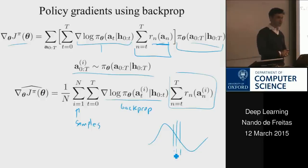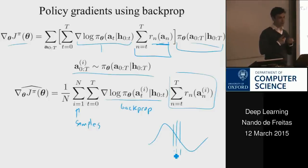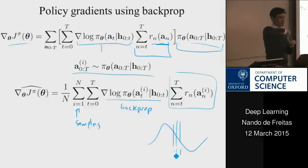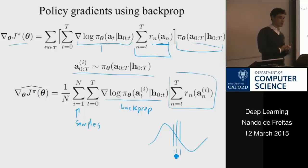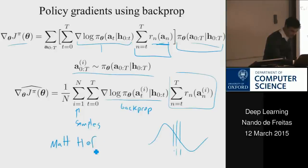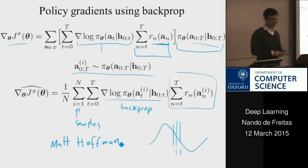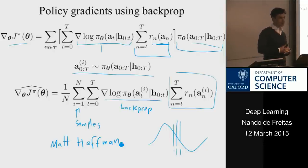A useful trick is to break the distribution into a deterministic part and a stochastic part, simulate only the noise, and backpropagate through the deterministic part — the same trick Carol used in variational autoencoders. This can also be used for control. There is a paper with Matt Hoffman (now a postdoc in Cambridge with Zoubin Ghahramani's group) doing exactly this kind of variance reduction.